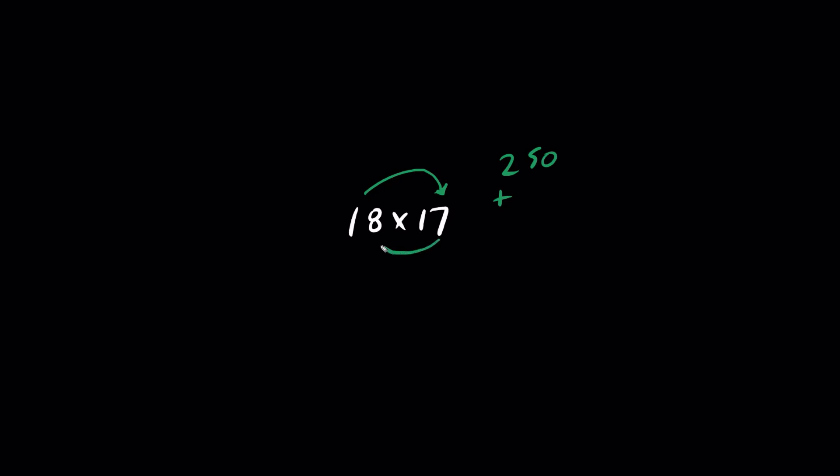7 times 7 is 49, 7 times 8 is 56. We multiply 7 times 8 is 56. And if you add it mentally, the answer is 306.